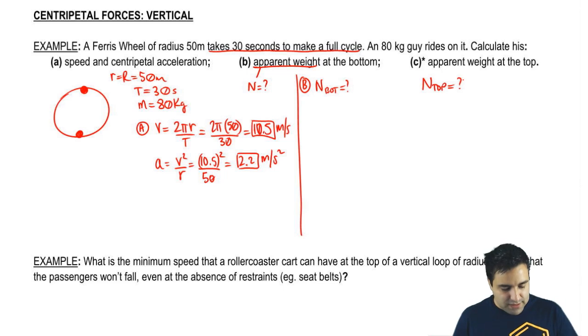So let's first draw what this looks like if he is in the bottom. So you're inside of the little cart for the ferris wheel, and that's you right there. So mg pushes you down, and normal pushes you up. So normal is positive, mg is negative.